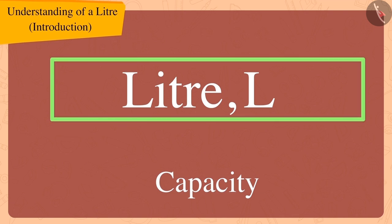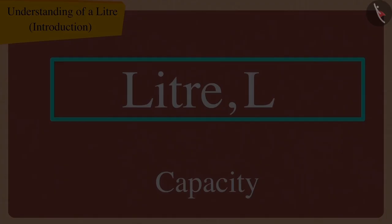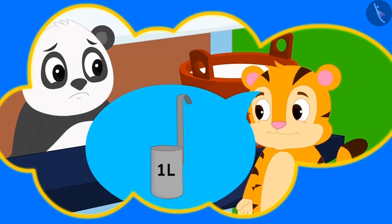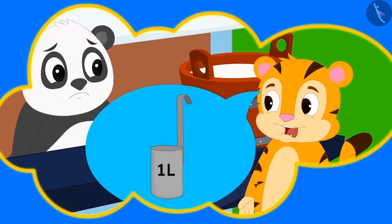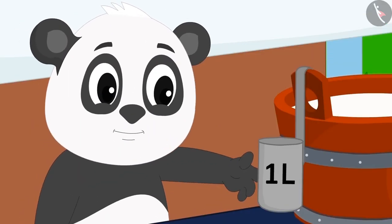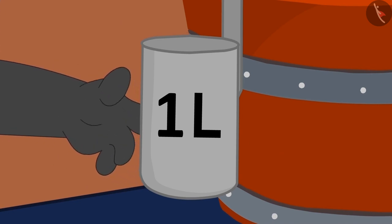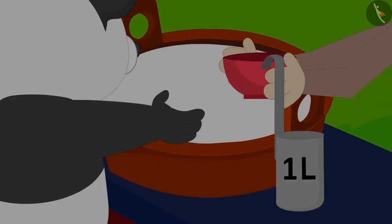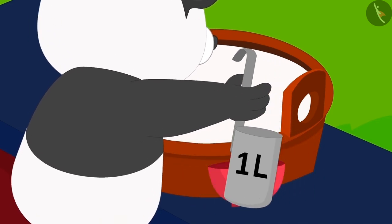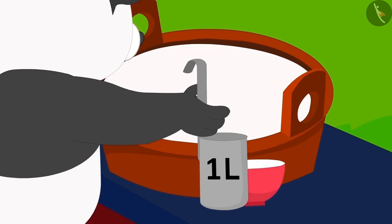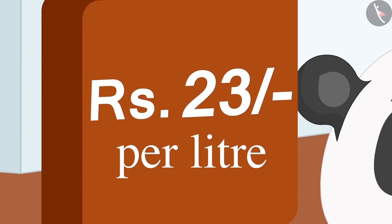We represent it with the sign L. When Sherekh Khan explained this to Golu, he immediately brought a litre measuring scale like this one from the market. Now Golu started selling milk using this measuring scale and took money from everybody according to the amount of milk per litre.